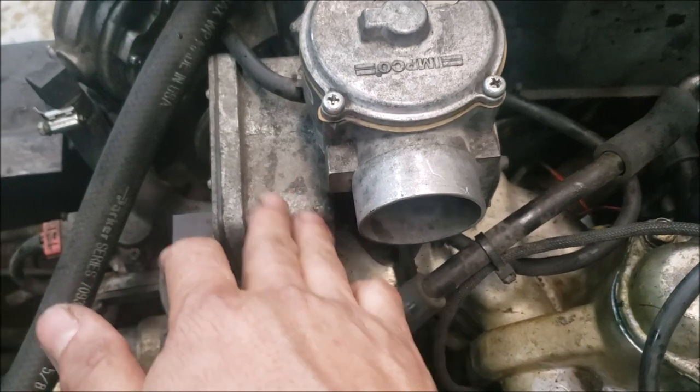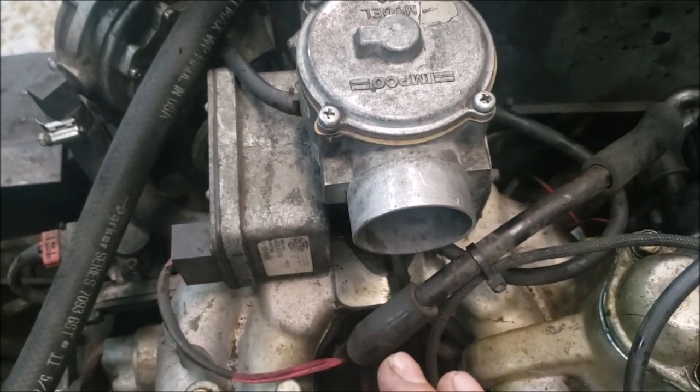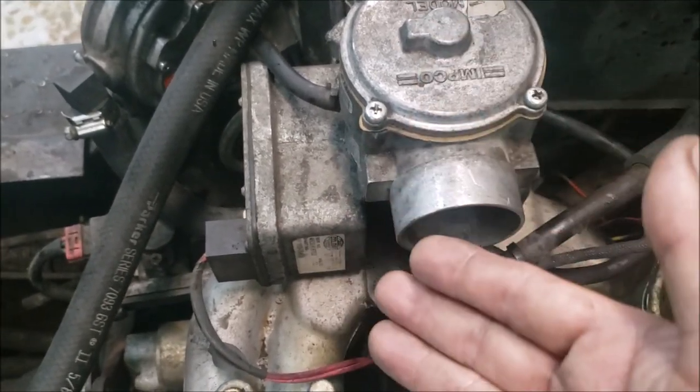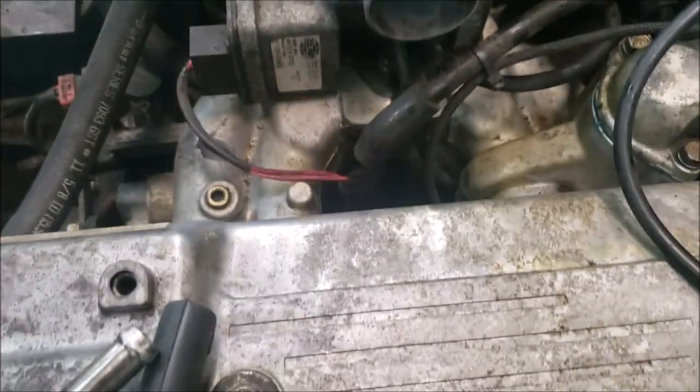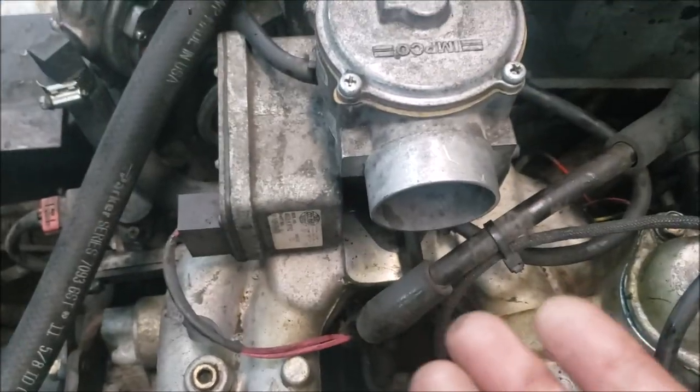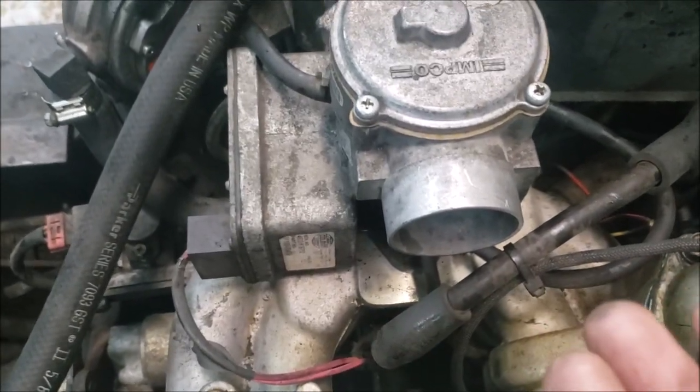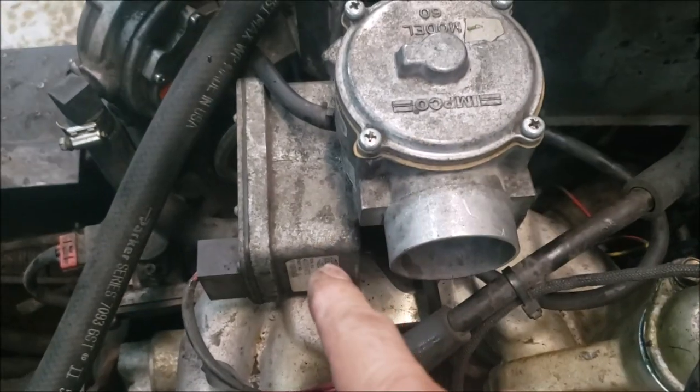One thing I want to look at is this throttle plate - is it opening? I've seen it before that if it doesn't open, because this is an electronic throttle, if it doesn't open then basically it's an intake restriction. You're not going to be able to take in any air, so this is the one thing that we're going to test next.